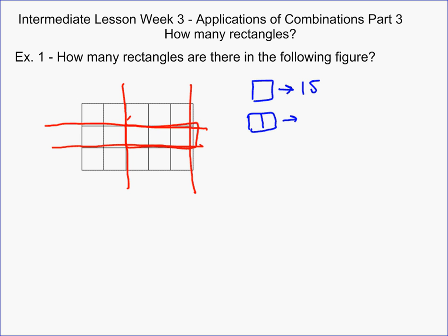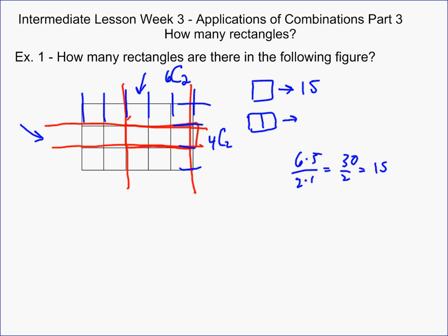So the number of rectangles is just the number of ways to select two vertical lines multiplied by the number of ways to select two horizontal lines. The number of vertical lines is 6, and I want to choose two of them, so I do 6 choose 2. That's 6 times 5 over 2 times 1, which gives 30 over 2, which equals 15. The number of horizontal lines is 4, and 4 choose 2 is 4 times 3 over 2 times 1, which gives 12 over 2, which is 6. So the total number of rectangles is 15 times 6, which is 90.